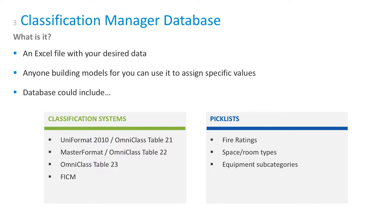You have to tell Revit what the subcategory is. Having a database in Excel — just a list — that you hand to teams saying 'whenever you're assigning equipment, pick a subcategory from this list' is very powerful. The classification manager allows two values: a name like 'air handling unit' and an abbreviation like 'AHU.' So when they build a schedule it's AHU-1, 2, 3, 4, 5. Every owner needs an equipment subcategory database, and you can align it with your O&M system whether you're using FMSystems, Archibus, Maximo, or whatever.